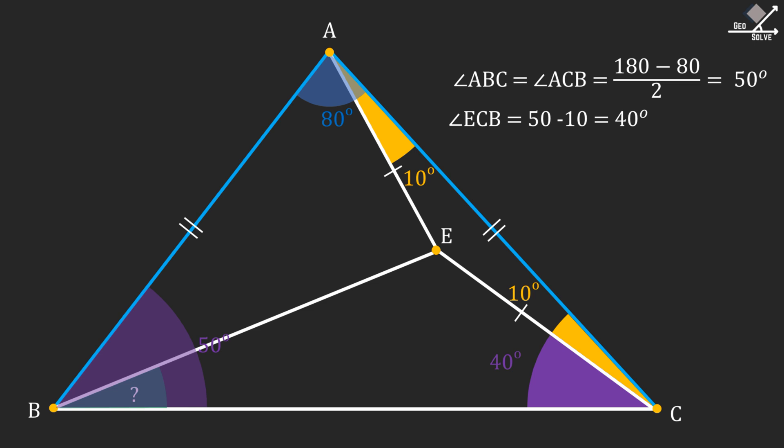From here, angle ECB can be calculated as 40 degrees. Okay, at this point we are kind of stuck.